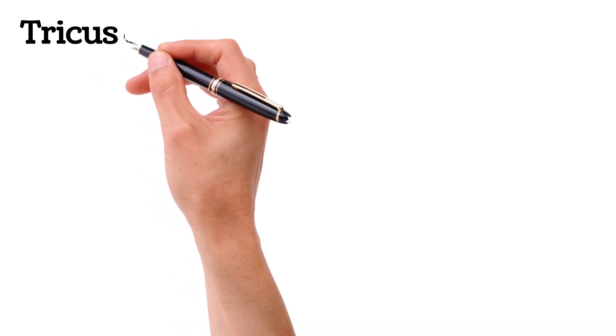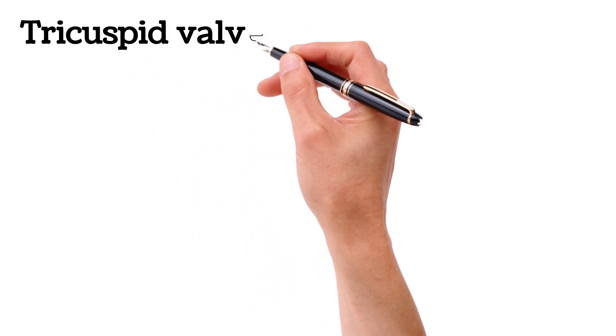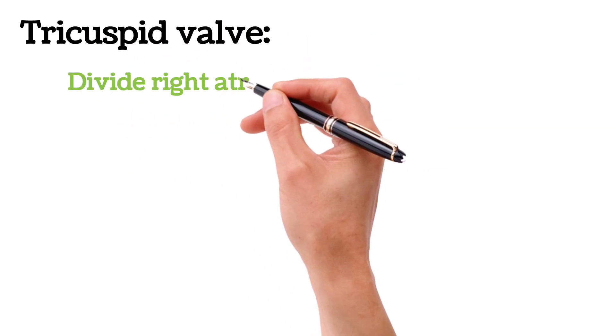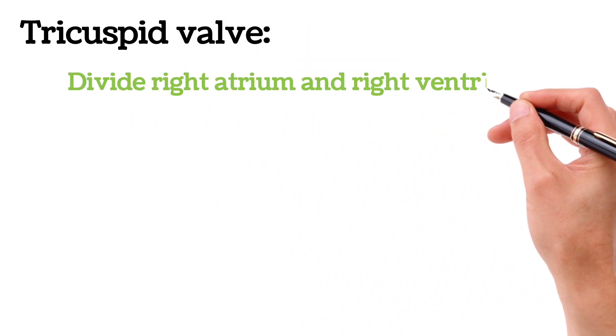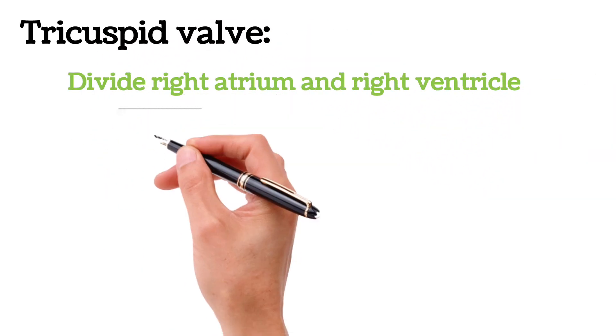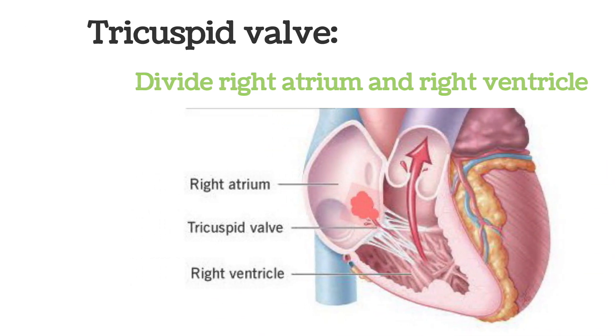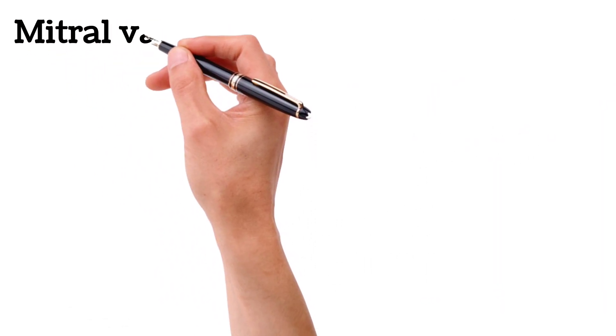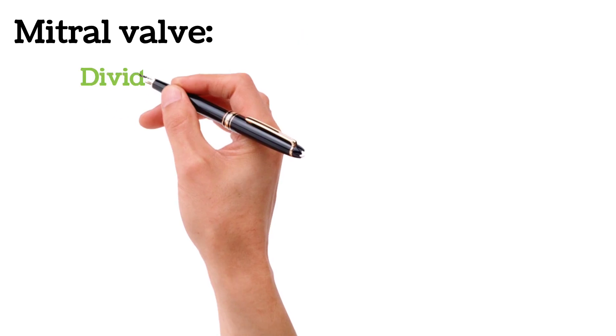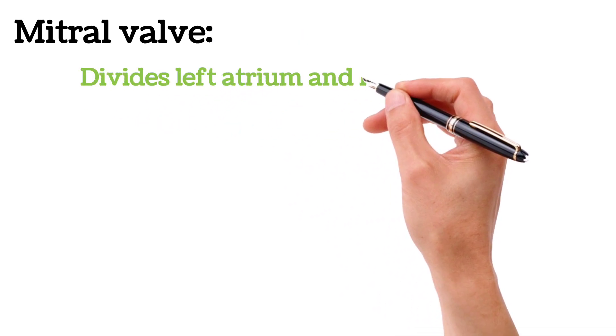The tricuspid valve divides the right atrium and right ventricle. The mitral valve divides the left atrium and left ventricle.